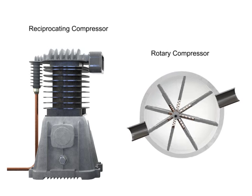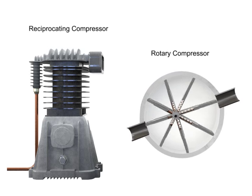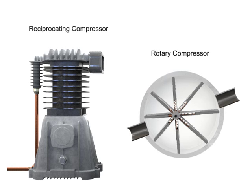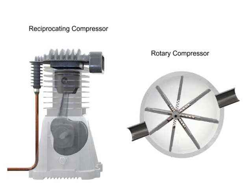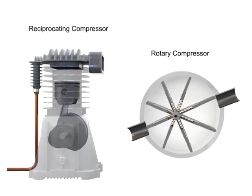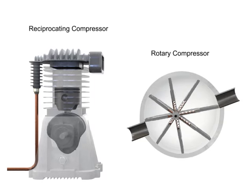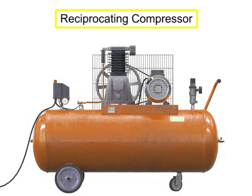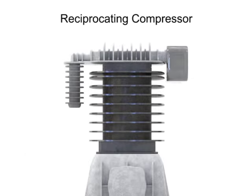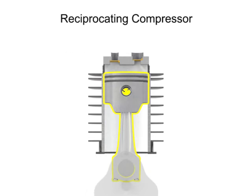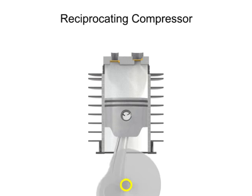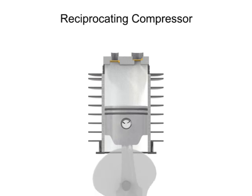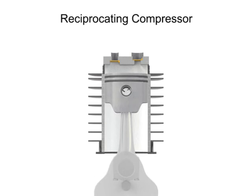Rotary compressors are typically free of the vibration and pulsation that occurs with reciprocating compressors. A typical reciprocating compressor consists of a housing with an internal piston connected to a crankshaft. As the crankshaft turns, a piston reciprocates within the cylindrical housing. There are two valves at the head of the cylinder — an inlet and an outlet.